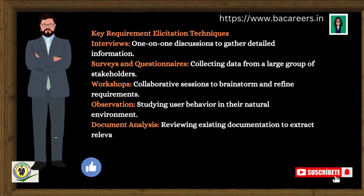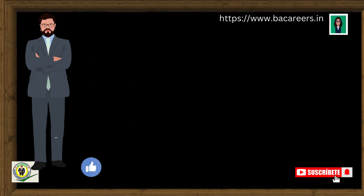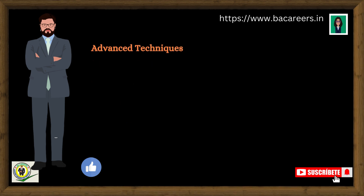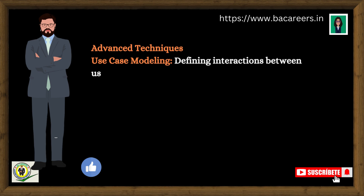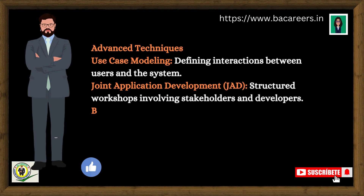Document analysis involves reviewing existing documentation to extract relevant requirements. Prototyping means building a model to gather feedback on the look and feel of the solution. Advanced techniques include use case modeling — defining interactions between users and the system — and Joint Application Development (JAD) — structured workshops involving stakeholders and developers.